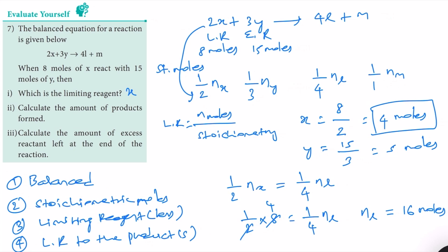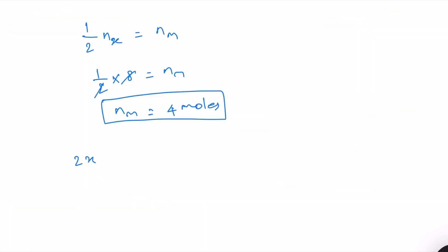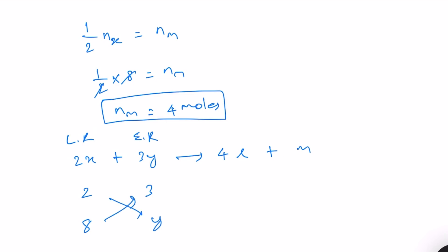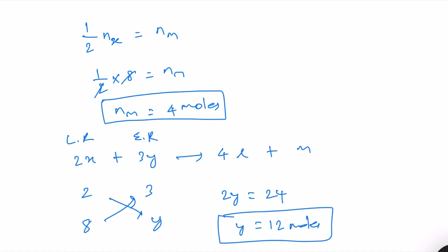Now let's calculate the amount of excess reactant left at the end of the reaction. From the balanced equation 2X + 3Y → 4L + M, X and Y are in a 2-to-3 ratio. With 8 moles of X as the limiting reagent, we solve for the moles of Y needed: 2 over 3 equals 8 over Y, so 2Y = 24, giving Y = 12 moles of Y needed.